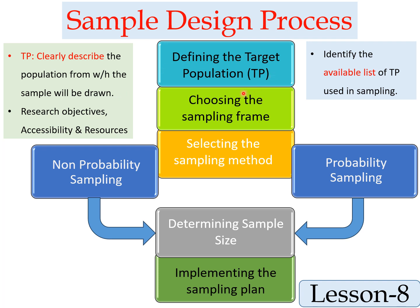After defining the target population, the next step is choosing the sampling frame. Ideally, the sampling frame is the same as the target population. But in practice, the sampling frame is the available list of the target population used in sampling — the working definition of the target population.